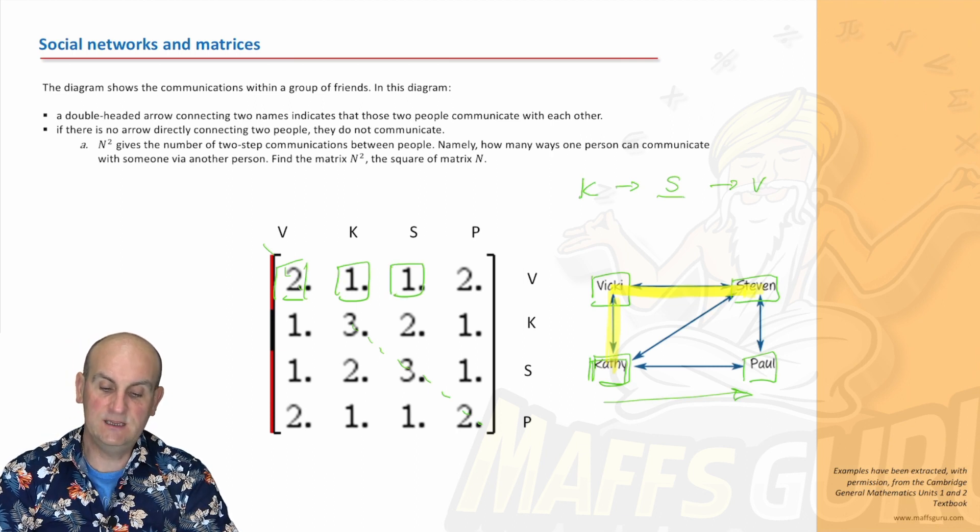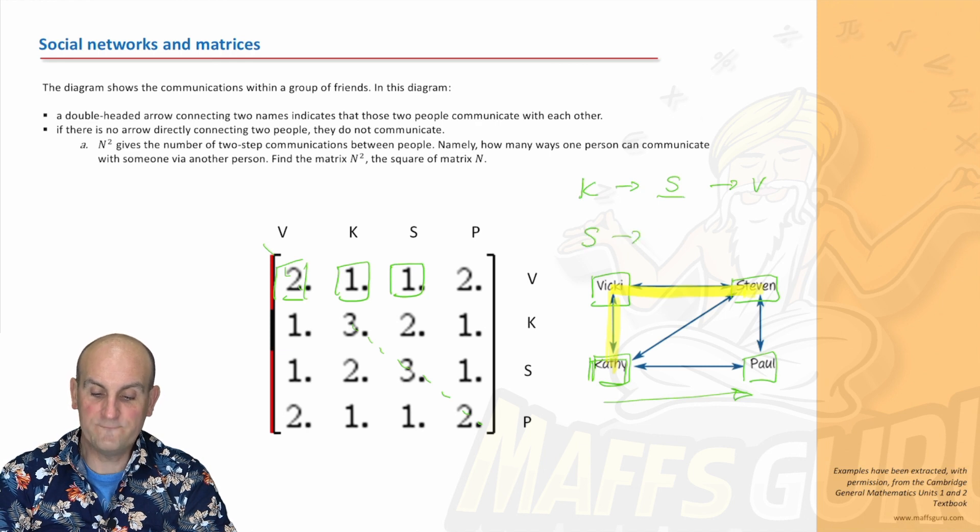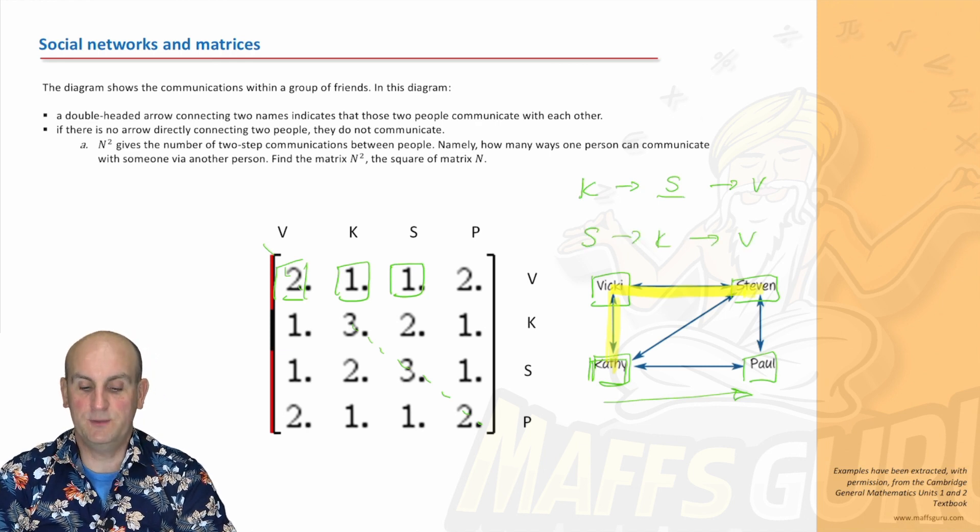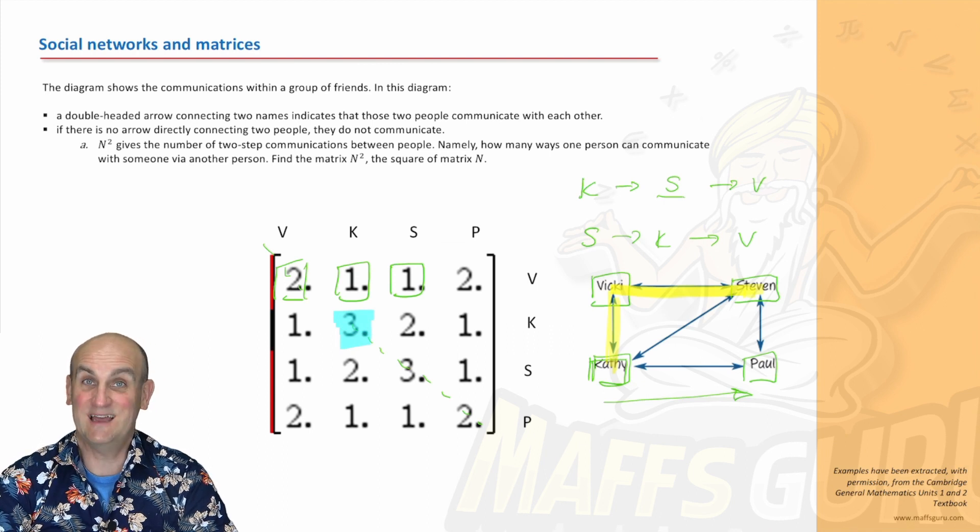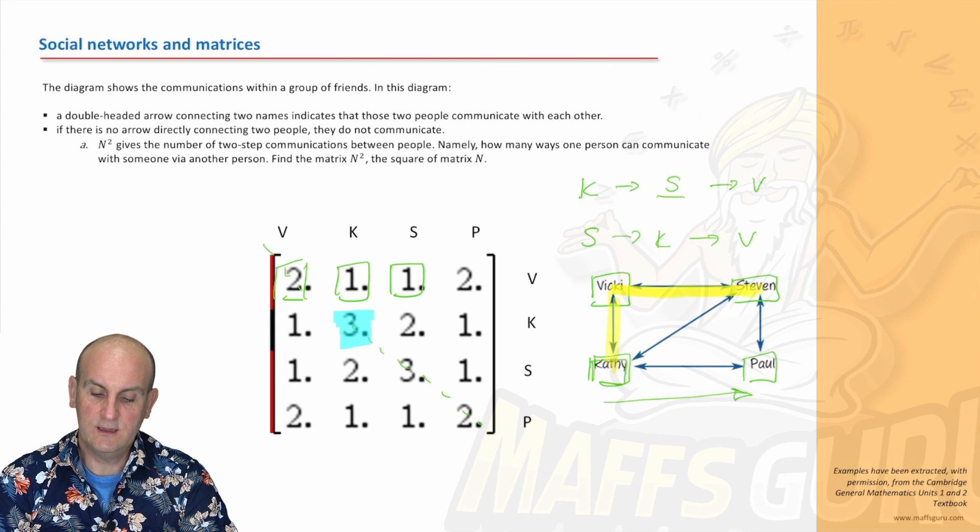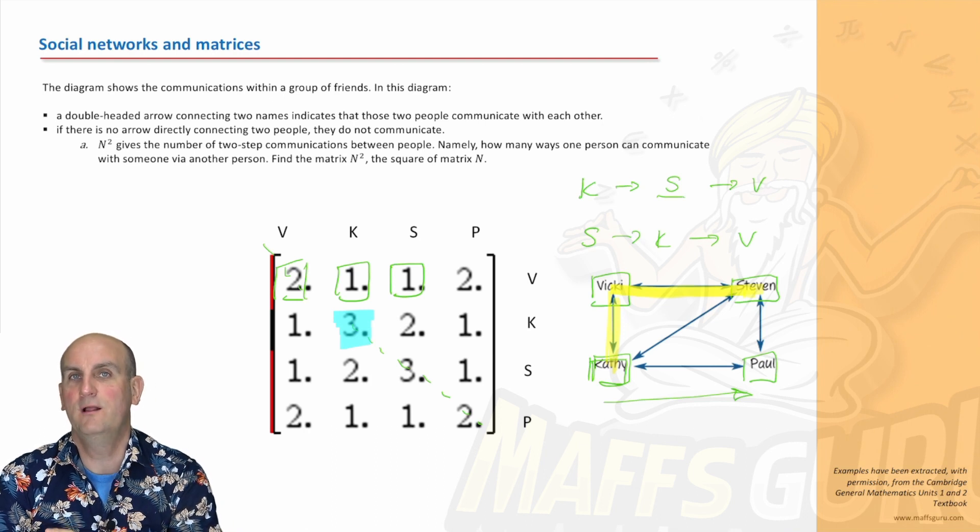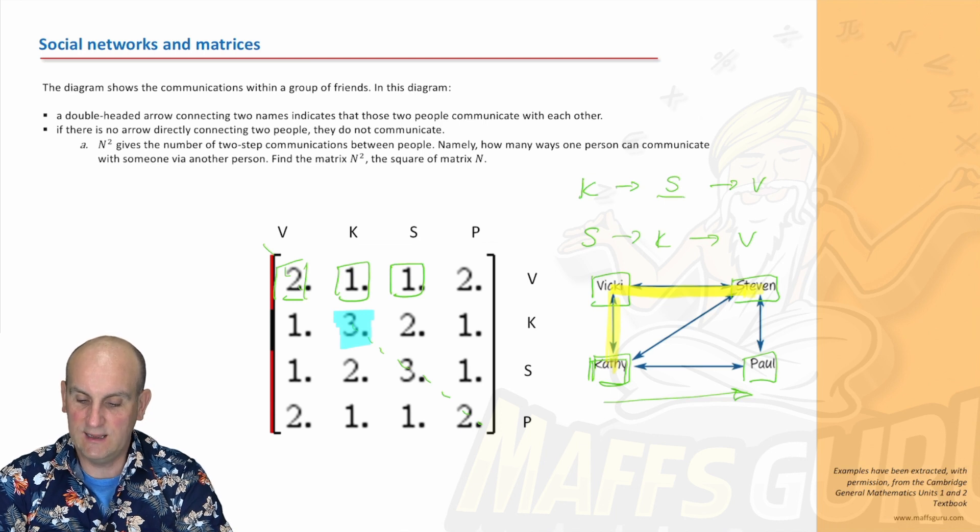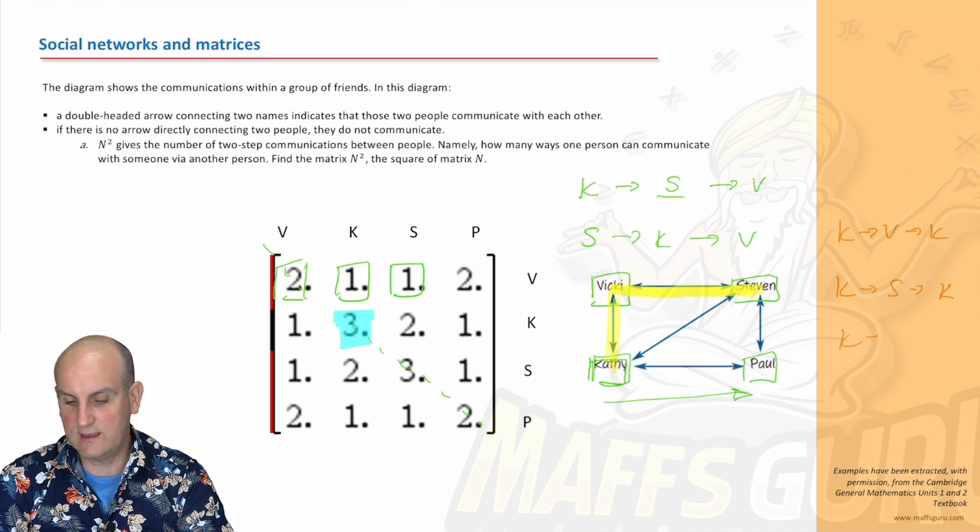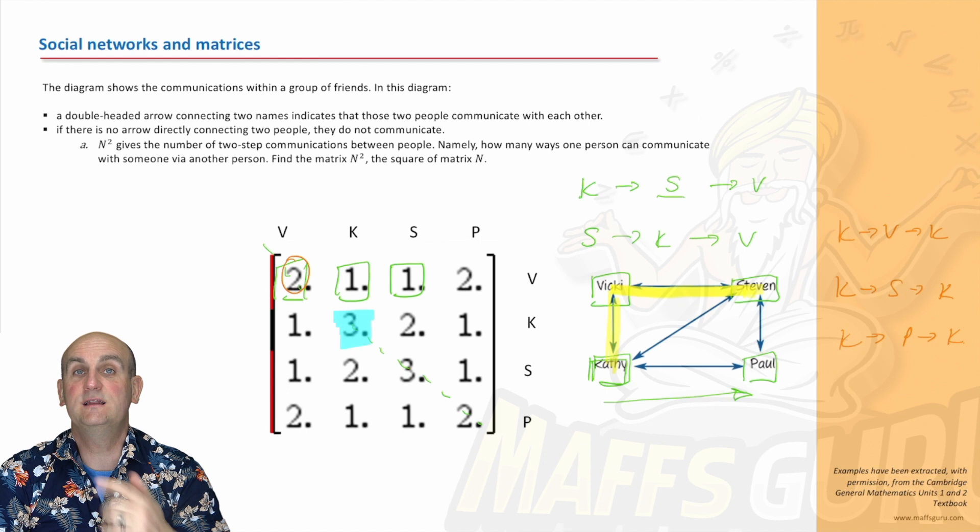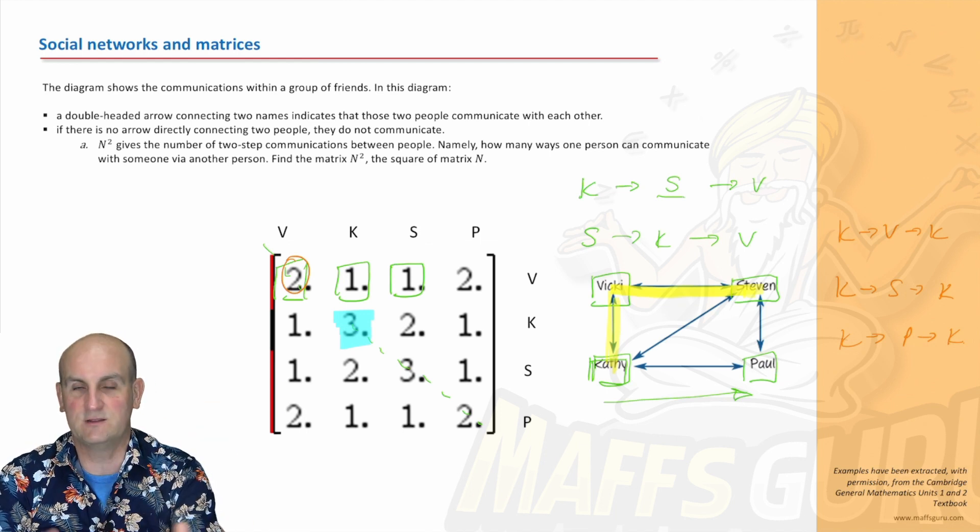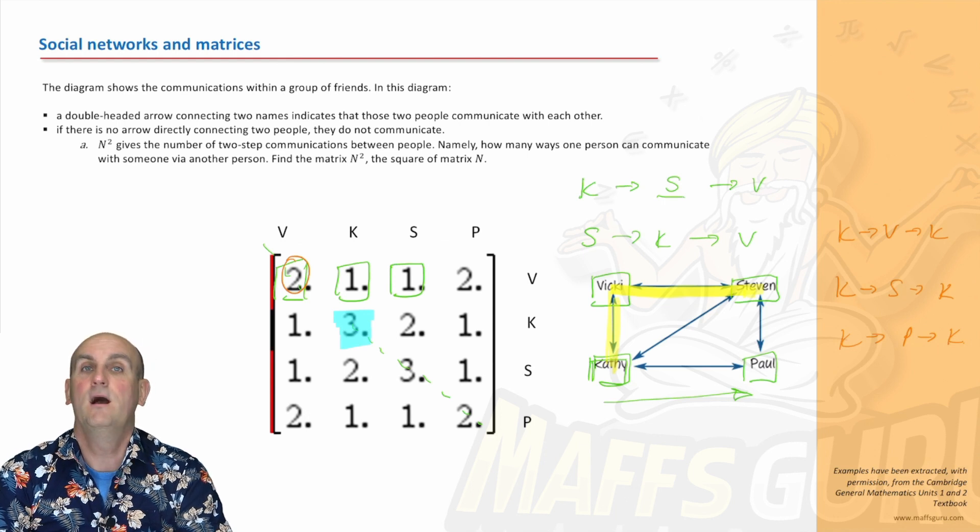If we look at Kathy to Vicky, how many ways are there? Kathy can only pass through Stephen to get to Vicky. There's only one way. One of the interesting ones is this three here. Kathy to Kathy, how is that a three? Because Kathy can talk to three people, there must be three ways of talking to someone and getting it back. Kathy can go to Vicky and back, to Stephen and back, and to Paul and back. With Vicky to Vicky, because Vicky doesn't talk to Paul, there's only two ways.